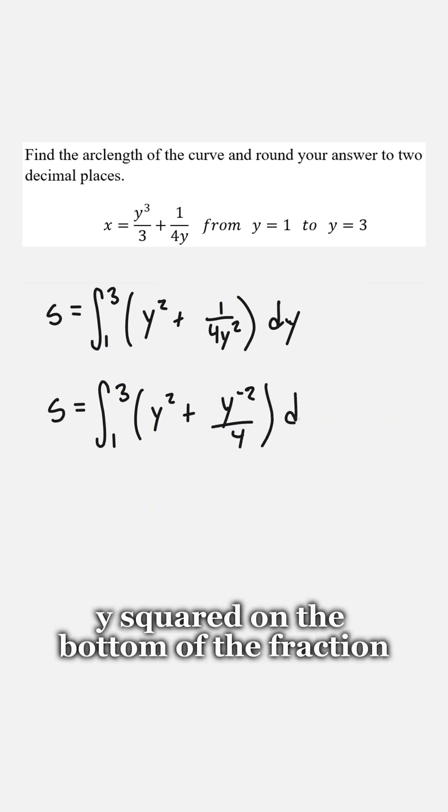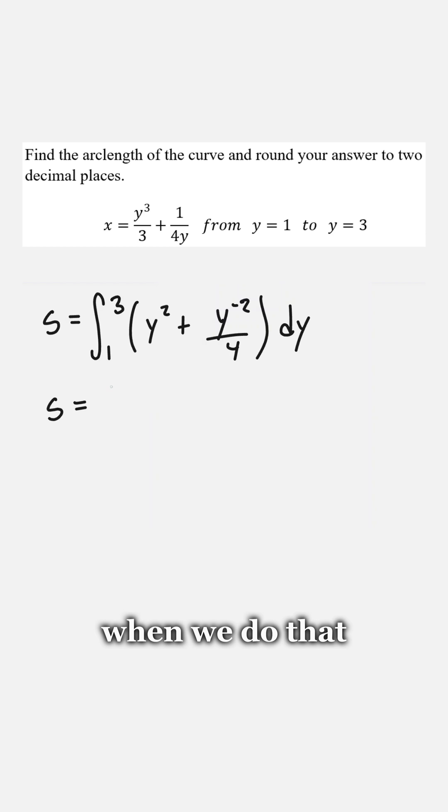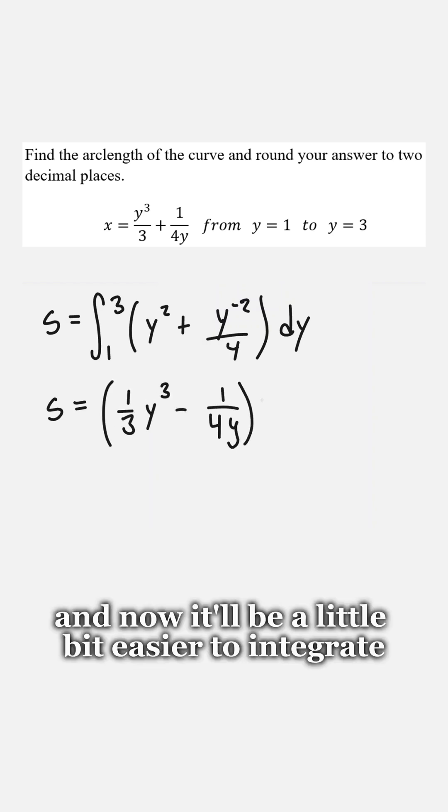Now we can take that y squared on the bottom of the fraction and flip it up to the top of the fraction. When we do that, we have to change the power of the exponent to make it negative. And now it'll be a little bit easier to integrate.